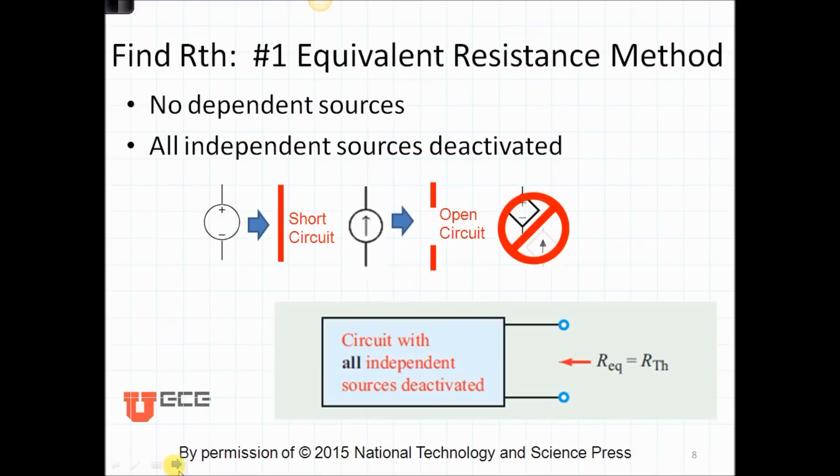There are three ways to find the Thevenin resistance, and I'm going to show you all three. The first one can only be used if there are no dependent sources, and it's probably the easiest of the methods. What you do is you deactivate all the independent sources. You convert a voltage to a short circuit, a current to an open circuit, and of course you can't have dependent sources. Then you simply look into points A and B, and you see what the equivalent resistance is there, and that's equal to the Thevenin resistance.